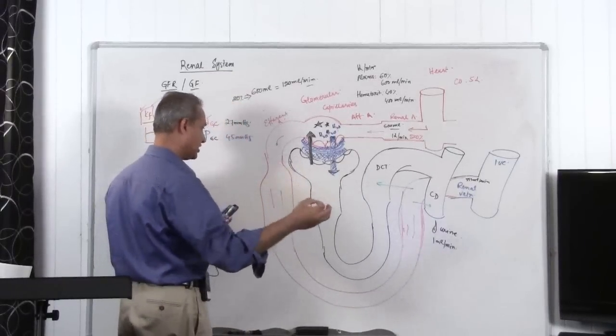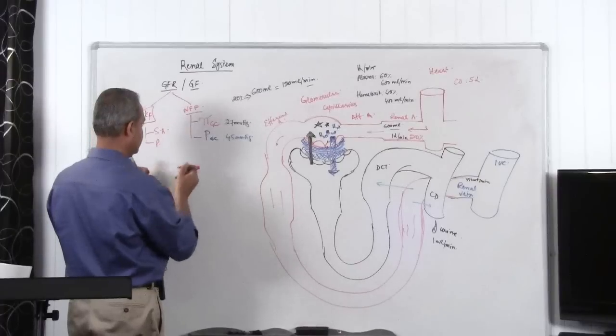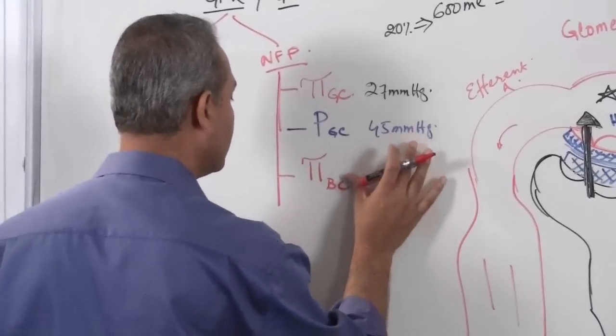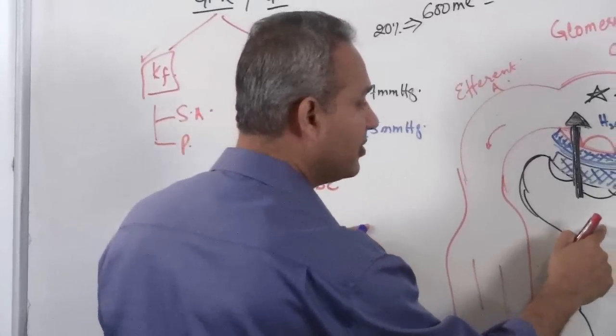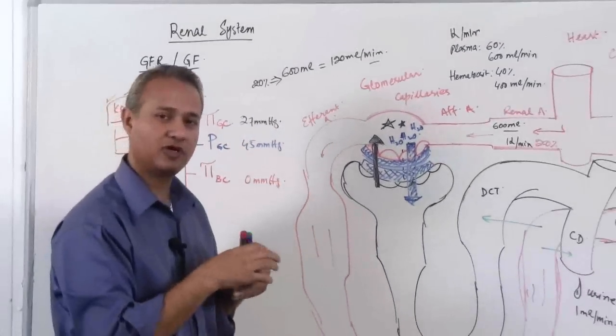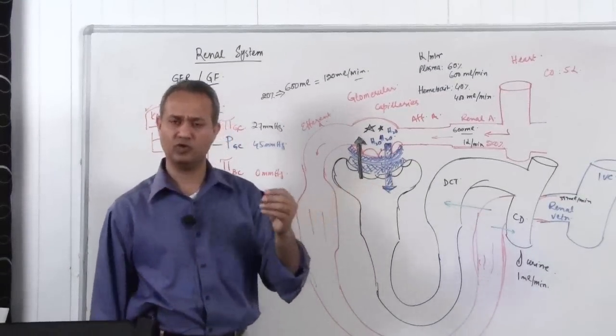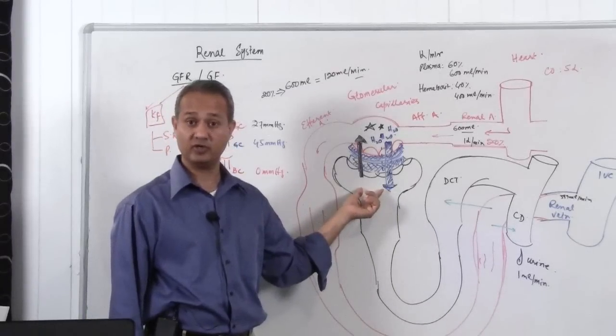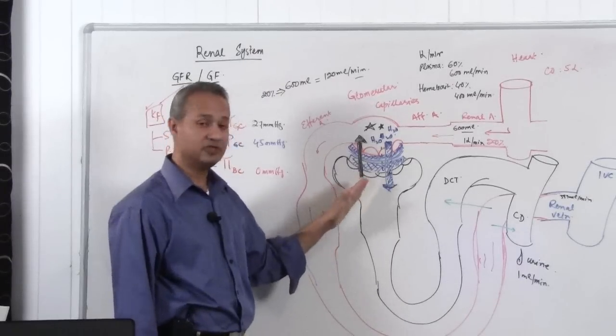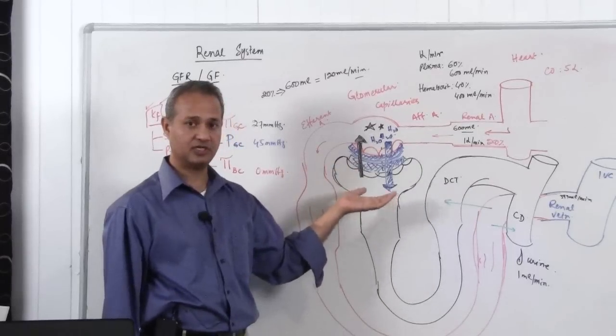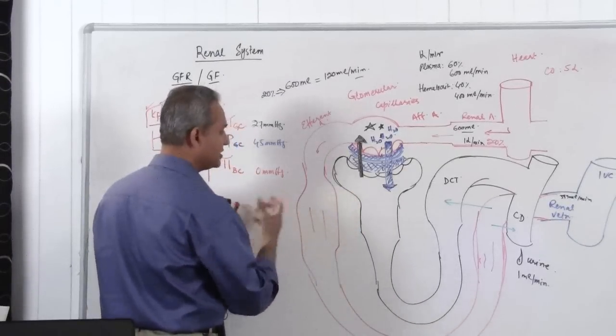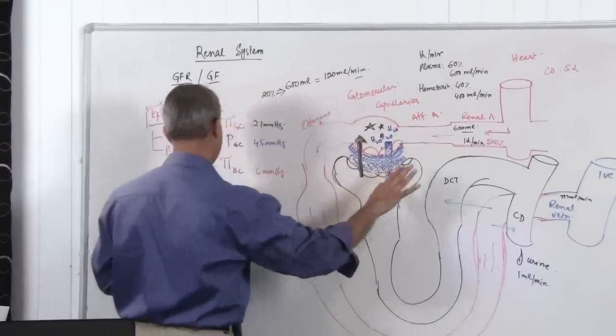The factors are actually fortunately the same factors. So Bowman space oncotic pressure in the Bowman capillary or Bowman space, Bowman capsule. Why do I call it capillary? Maybe because it's a C. So Bowman capsule oncotic, normally it is 0. Why 0? Because you usually do not want to see proteins in the Bowman capsule. Normally if there are proteins other than small amino acids which are there, if you actually start seeing albumin or globulins in here, then the patient is sick. So that is 0.